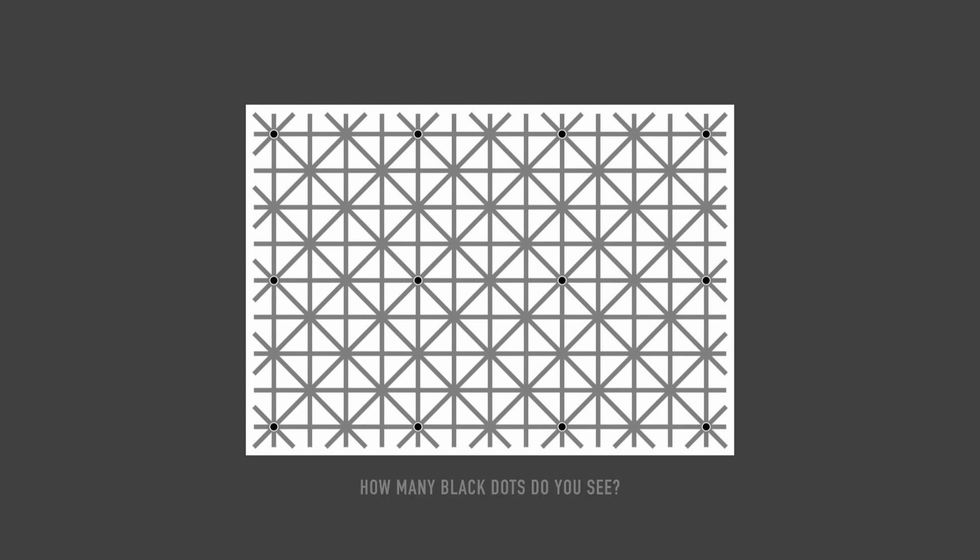Another geometric test. How many black dots do you see? At the same time, no more than four — in rare cases, six. In fact, there are twelve of them. But you cannot see everything at once, because there are so-called blind spots in our eyes.